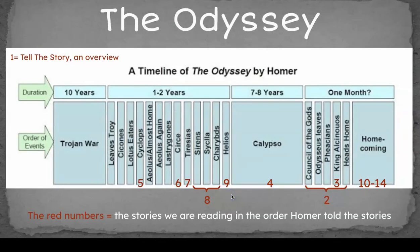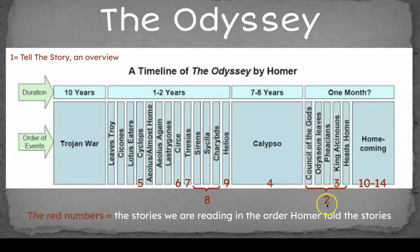The way Homer tells the story is he starts with an overview — that's story one, Tell the Story. Then he starts kind of in the middle. Story two is about Queen Penelope and what's happening at home while Odysseus is gone, not just during the Trojan War but all those years. By the time he actually arrives home, he's been gone 20 years. Then we go to story three, King Alcinous's court, where Odysseus will go back and say, 'These are all the things that happened just before I arrived.'